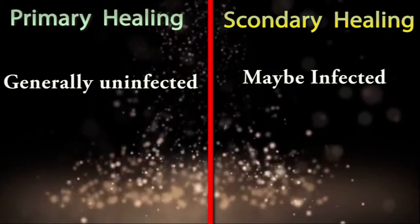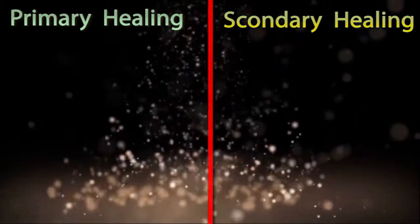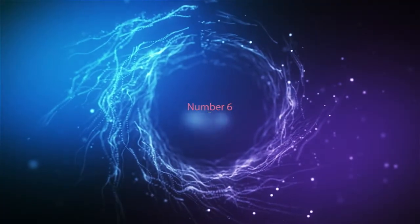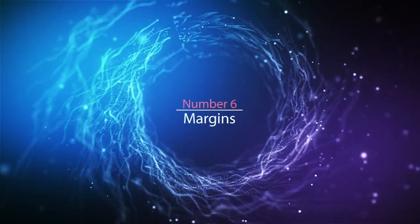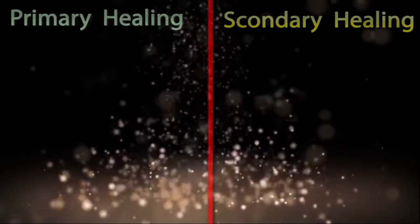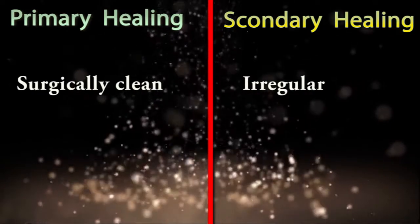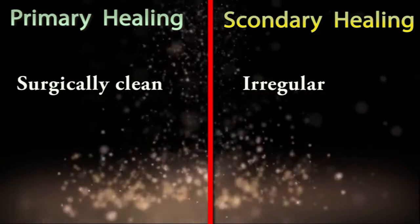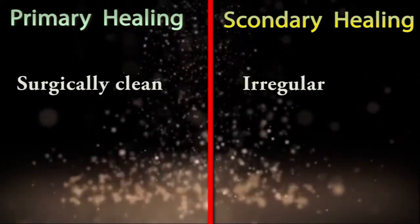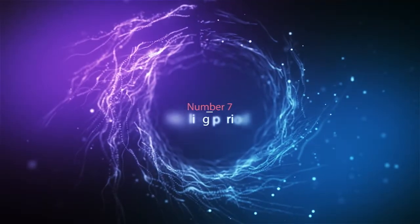Difference number five is infection: the primary healing process is generally uninfected, but secondary healing may be infected. Difference number six is margins: in the primary healing process, margins are always surgically clean, but in the secondary healing process, margins are irregular.